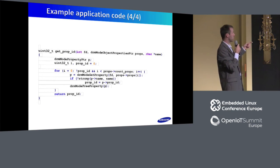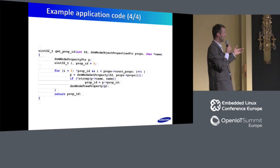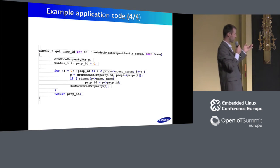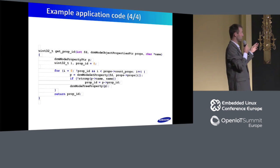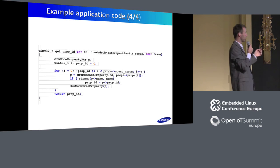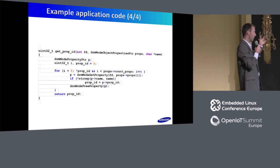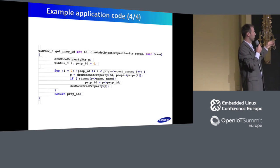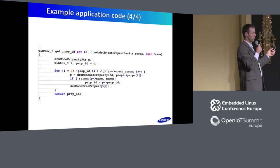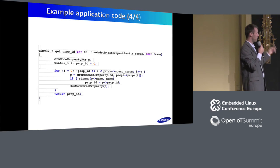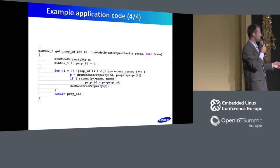The helper function is used to get the ID of a given property by name, by simply getting the parameters of the given property and checking if the name matches the requested one.